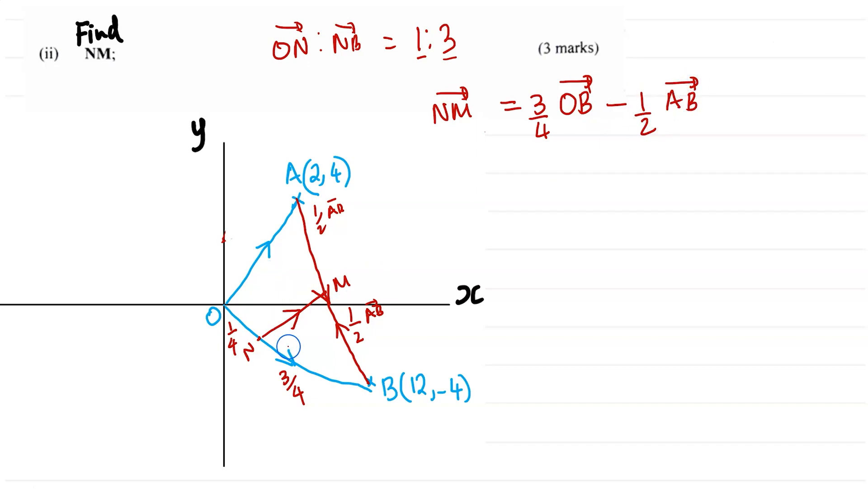We have that information. So all we have to do now is just put our vectors in. So 3/4, we are told OB is the column vector (12, -4). This was given. Take away half of AB. Now AB is a vector we just calculated in part I, which was (10, -8).